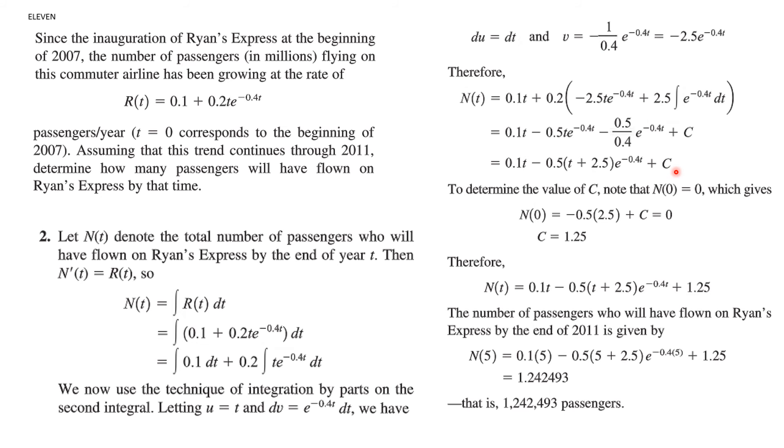Now to determine c, we can say what happens at our initial value. So n at 0 is equal to 0. So we plug that in, and we figure out c has to be 1.25. Therefore, this is now n of t, and we've replaced c with 1.25. So the number of passengers will be this. We substitute the numbers in, and we will get 1,242,493.